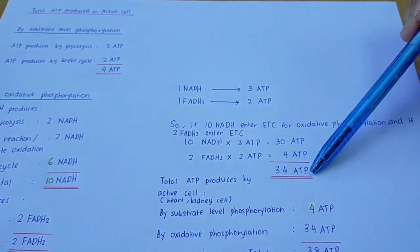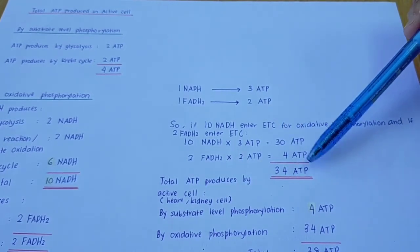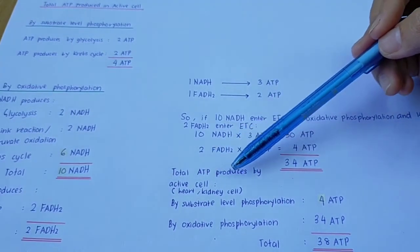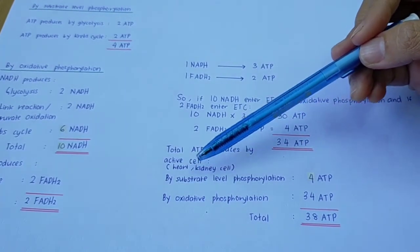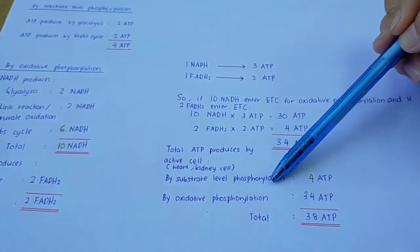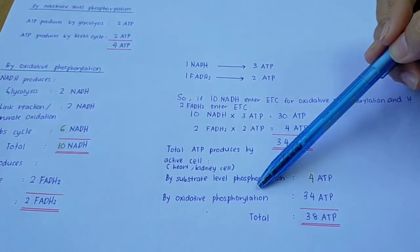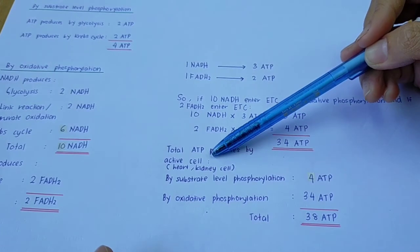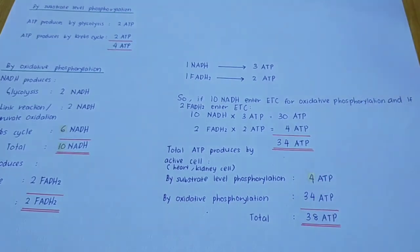To find the total ATP produced by an active cell, you need to add the ATP from substrate-level phosphorylation and from oxidative phosphorylation. Substrate-level phosphorylation gives 4 ATP, and oxidative phosphorylation gives 34 ATP. So the total ATP produced by an active cell — examples being heart and kidney cells — is 38 ATP.